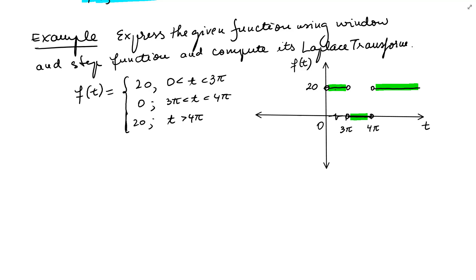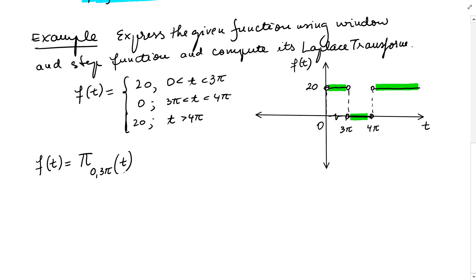Looking at this graph, we notice that between 0 and 3 pi we have a rectangular window function, between 3 pi and 4 pi it's 0, and then we have a unit step function from 4 pi on. We write f of t equals 20 times pi between 0 and 3 pi of t — we multiply by 20 because the function goes up to 20, not just 1.